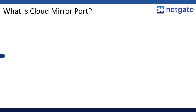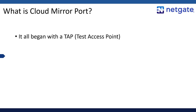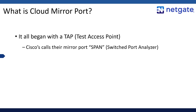First of all, Cloud Mirror Port is a descendant of a network technology called Test Access Point, or TAP. TAPs were originally a specialized type of network monitoring hardware. Later, switch vendors incorporated similar technology into their hardware, calling it a mirror port. Cisco calls their mirror port implementation Switched Port Analyzer, or SPAN.